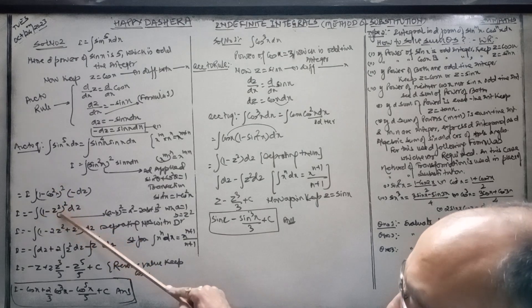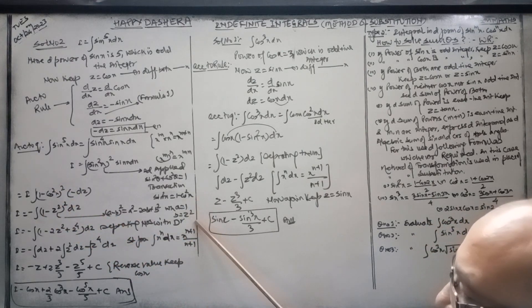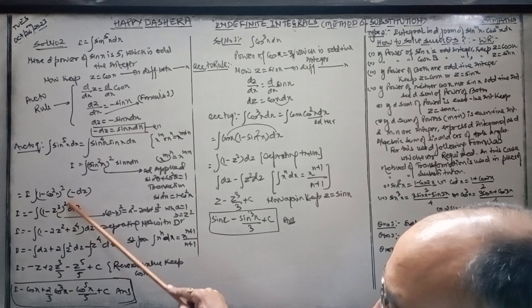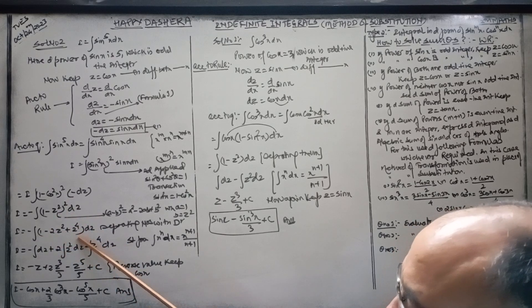So (1 - z²). Using (a minus b) whole square formula: a² minus 2ab plus b².